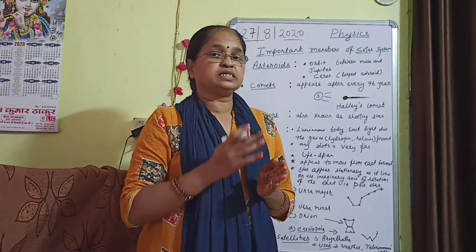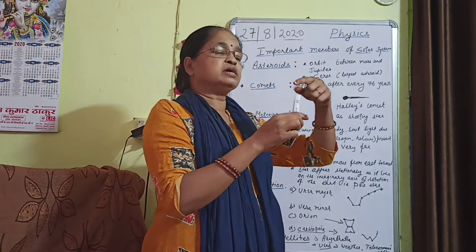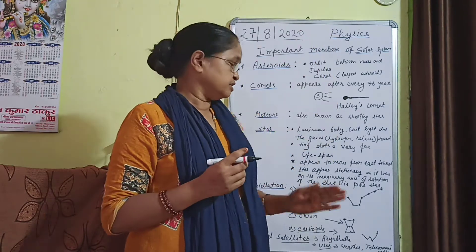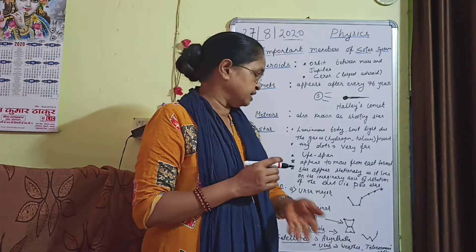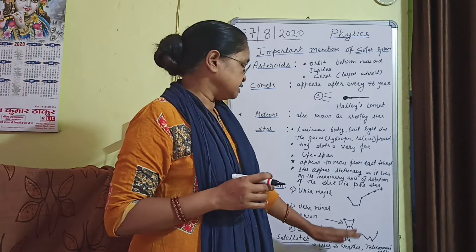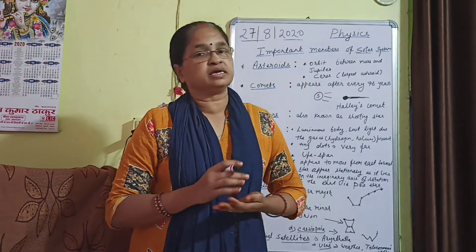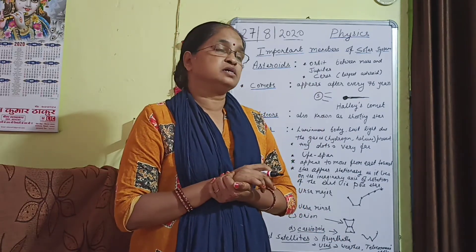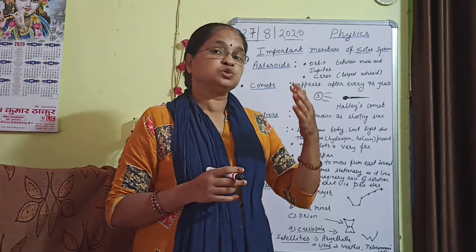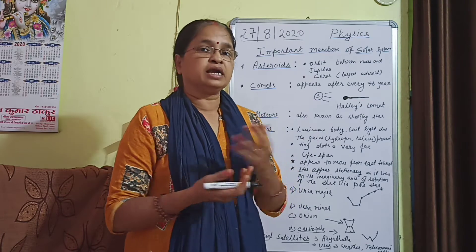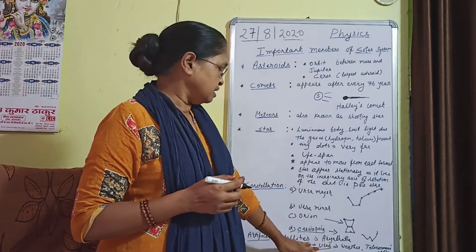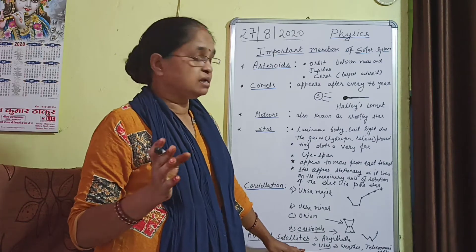A man-made satellite revolving around the Earth is known as an artificial satellite. The first Indian satellite was Aryabhata, and after that India has launched a number of satellites — for example, INSAT 1A, 1B, the 1-series, INSAT 2 series, Kalpana, IRS, Rohini, and many others.